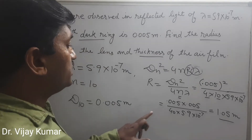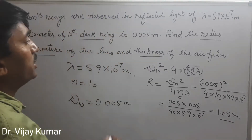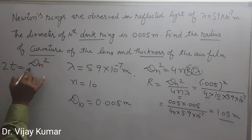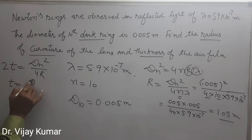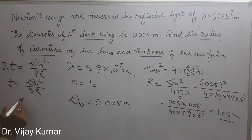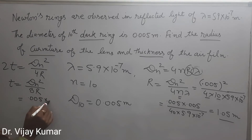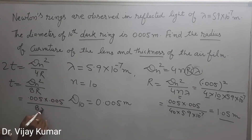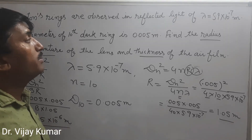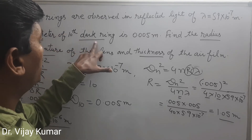After solving, the radius of curvature of the lens is 1.05 meter. Now for the second part, we determine the thickness of the air film. We know that 2t = dn² / 4R, so t = dn² / 8R. With dn = 0.005 and R = 1.05, solving gives t = 2.95 × 10⁻⁶ meter.